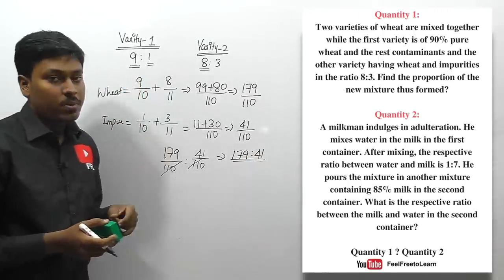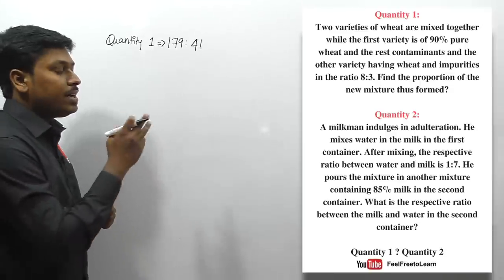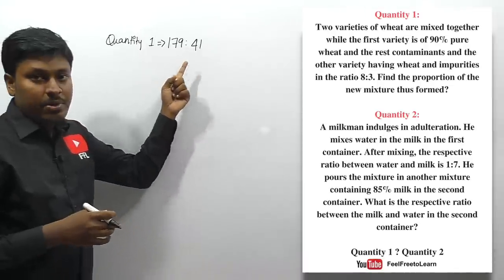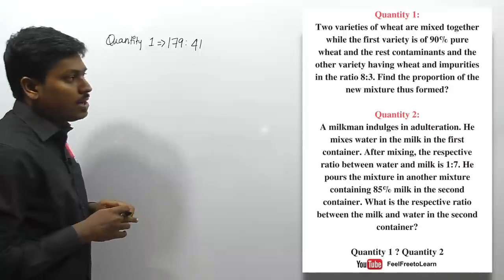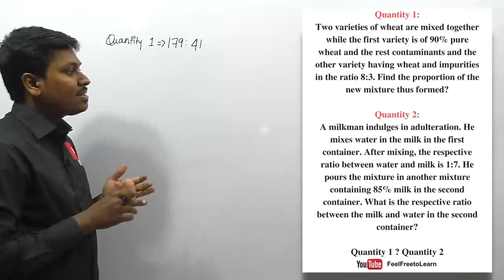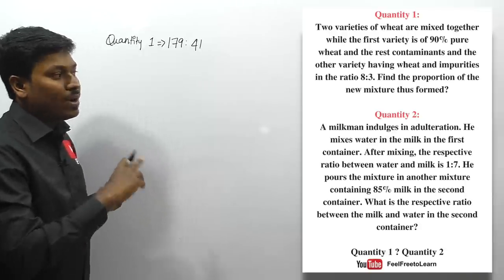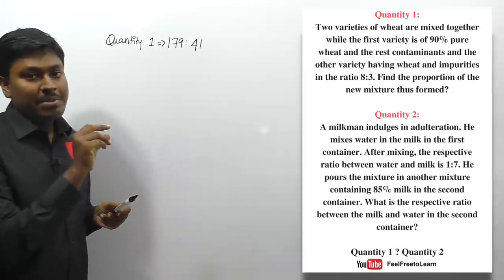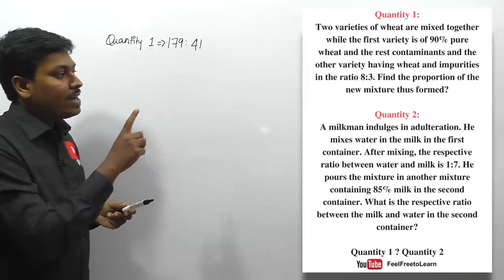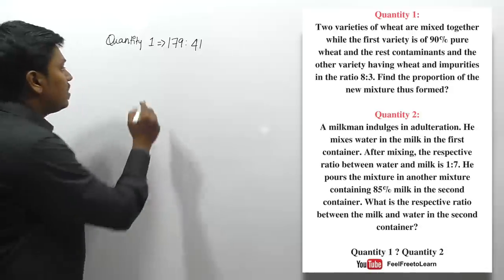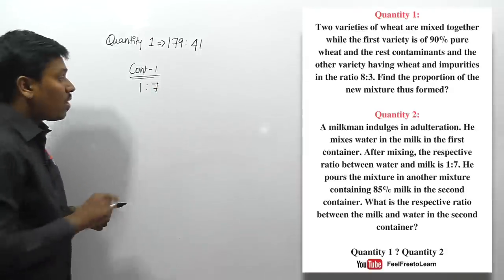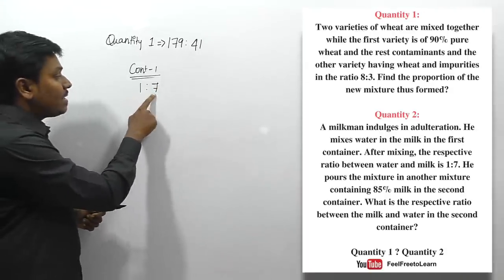Moving to quantity number two: a milkman mixes water in milk. After mixing, the ratio between water and milk in the first container is 1:7. So out of 8 parts, one part is water and 7 parts are milk. He then pours the complete mixture into another container which consists of 85% milk, meaning 15% is water. Simplifying 85:15 gives a milk-to-water ratio of 17:3 in container two.